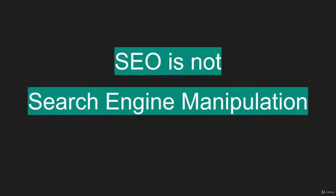One important note: SEO is not the manipulation of a search engine. A search engine tries to show its users the most relevant results. The best way to rank is actually to create the most relevant results for the users. We don't just want to pretend that we offer the best results — it's a much better long-term strategy to improve the quality of your content. In the long term, you will always rank well with good content. Of course, you can beat Google from time to time with so-called black hat SEO measures and succeed by ranking with weak content. However, this is not a long-term strategy — sooner or later, you will lose your rankings again.